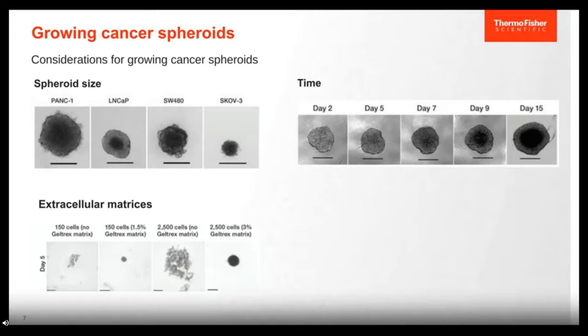Some cell lines form spheroids on their own, while others will form loose or tight aggregates, requiring assistance from materials such as an extracellular matrix to help with spheroid formation. The ECM assists with the cell-to-cell contacts needed for cells to aggregate into a compact spheroid. In the image here, the PC3 cell line requires a little bit of GELTREX to facilitate spheroid formation. In the absence of this matrix, the cells gather together but don't form a compact spheroid, whereas in the presence of GELTREX at differing amounts, you see improvement in spheroid formation.